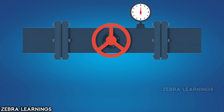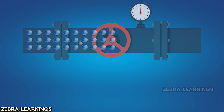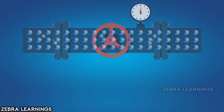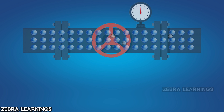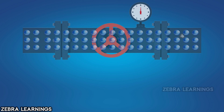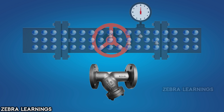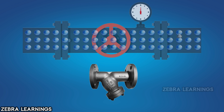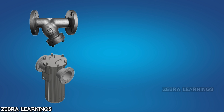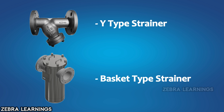In HVAC systems, there is often a lot of debris in the water flowing through the pipelines. We use strainers to filter out this debris. In HVAC, we use two important types of strainers: the Y-type strainer and the basket-type strainer.